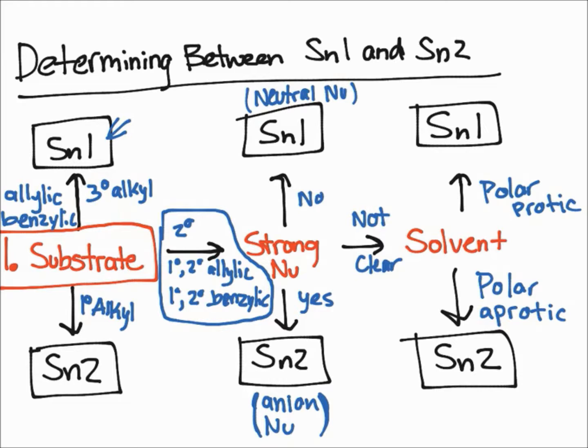So pretty much if you just follow this flowchart, you can determine between SN1 and SN2. You want to first look at the substrate, determine what kind of alkyl group it is, and then if that doesn't help you clarify whether it's SN1 or SN2, then you go look at the nucleophile. And then if you're still not clear, you look at the solvent if they even give you the solvent, which a lot of problems won't give you.